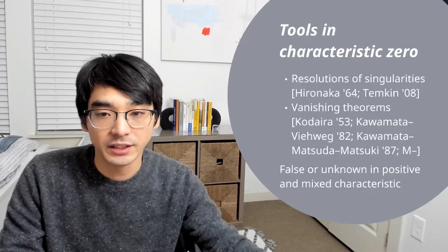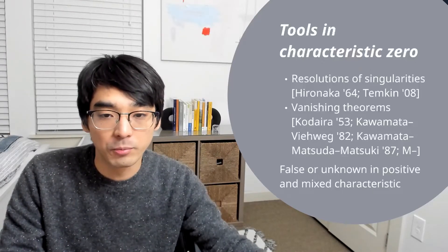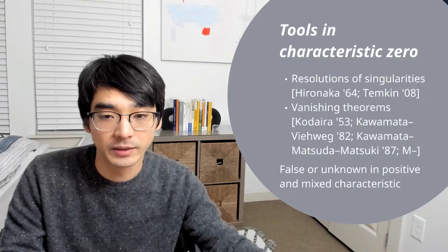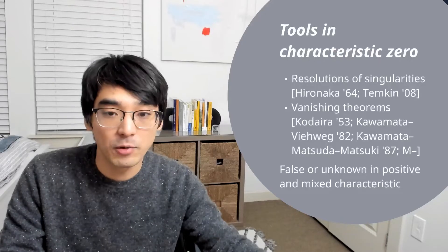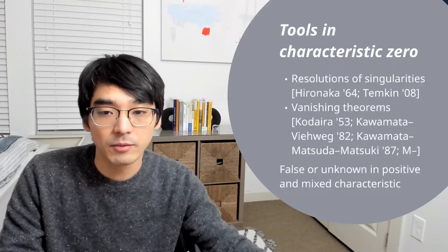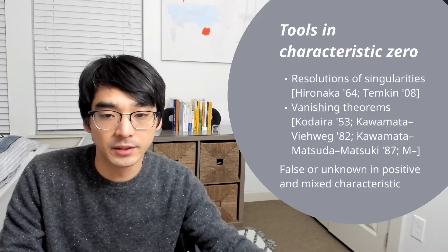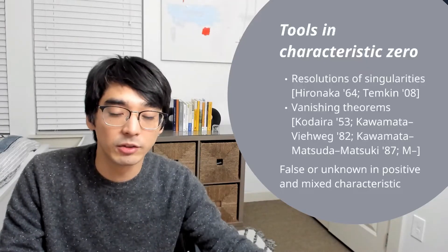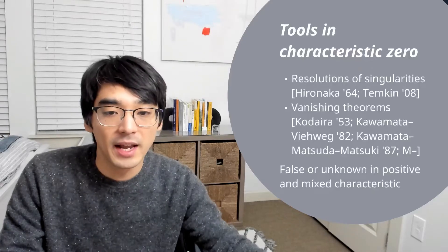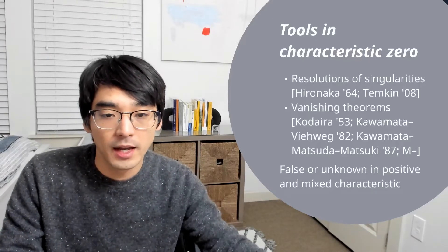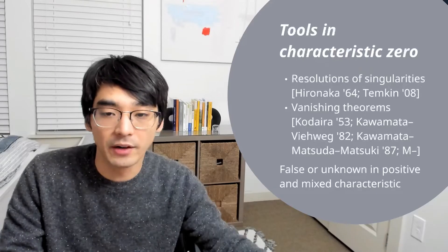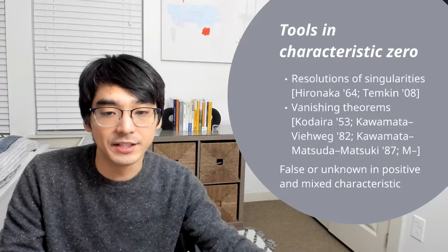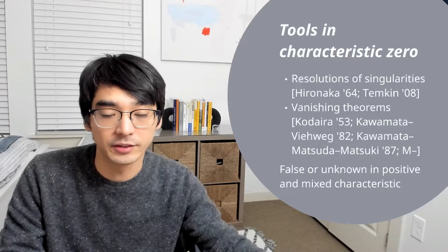The other thing I want to mention is that if you work with more general things over fields of characteristic zero — for example, if you're working over a formal power series ring or rings of finite type over formal power series rings — then we didn't know that resolution of singularities or vanishing theorems held until fairly recently. Resolution of singularities was proved by Temkin in 2008, and I was able to prove that these vanishing theorems hold. What I want to talk about next is what these vanishing theorems are, some applications, and what we can do instead in positive and mixed characteristics.